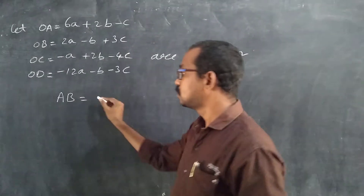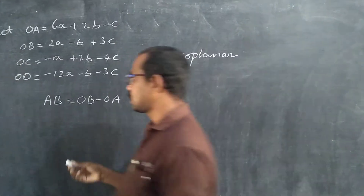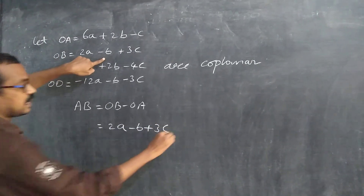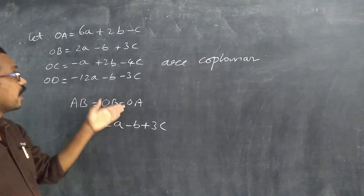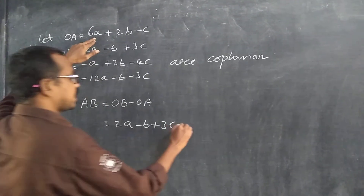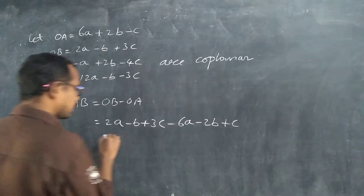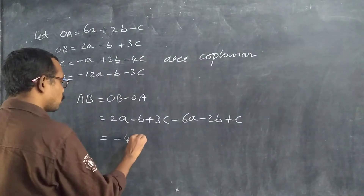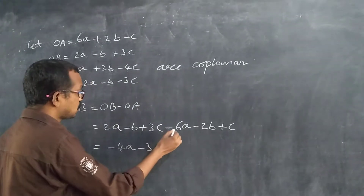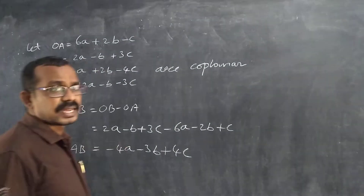Vector AB equals OB minus OA. OB value is 2a minus b plus 3c, minus OA. Signs change: plus 1 minus 1 minus 1 plus, so 6a becomes minus 6a, 2b becomes minus 2b, minus c becomes plus c. That gives AB equal to 2a minus 6a = minus 4a, minus b minus 2b = minus 3b, plus 3c plus c = plus 4c.